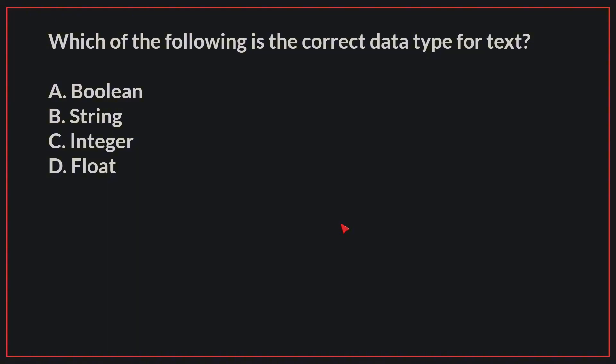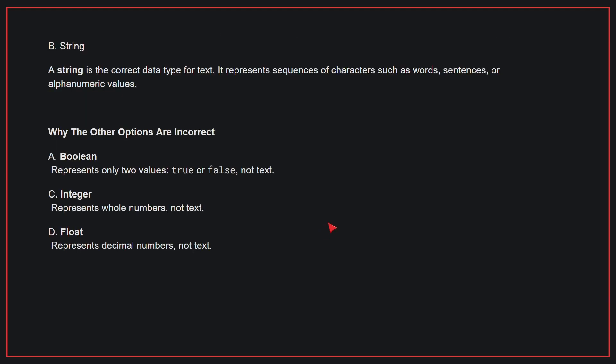Which of the following is the correct data type for text? The correct answer is B: String. A string is the correct data type for text. It represents sequences of characters, such as words, sentences, or alphanumeric values.